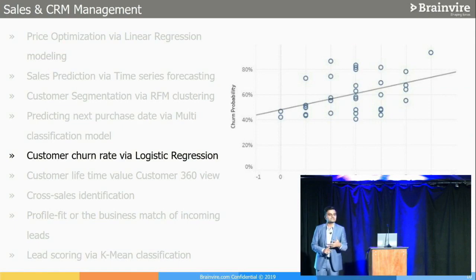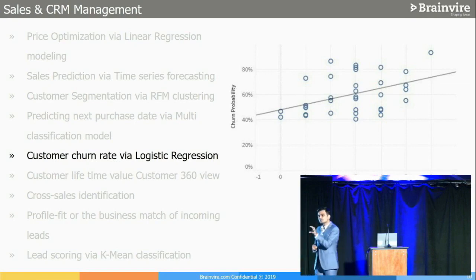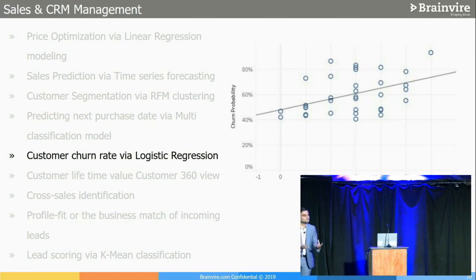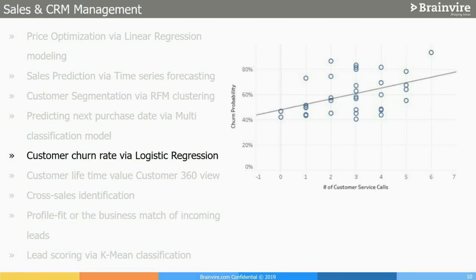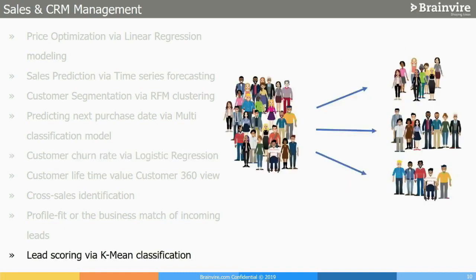Customer churn is something every business needs. How do you prevent customers from leaving? You look at signals like the number of service calls — if a customer makes 2 service calls, they may be churning; if they make 5, what's the probability they leave? This kind of information is useful, and you can also understand which customer segment is churning. We use logistic regression for this churn probability calculation.